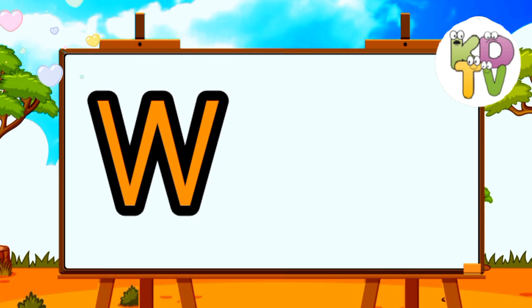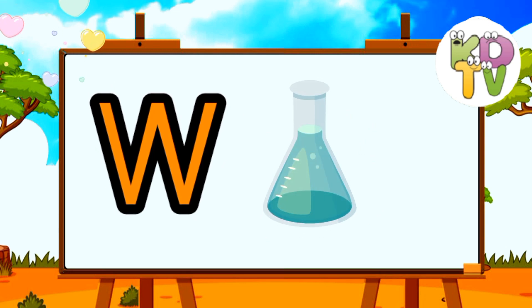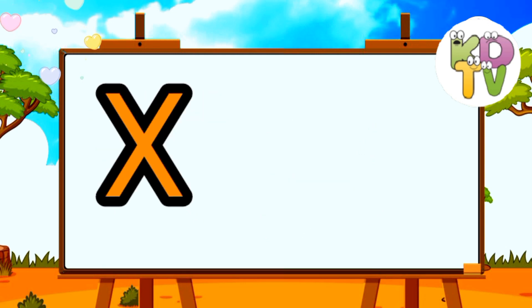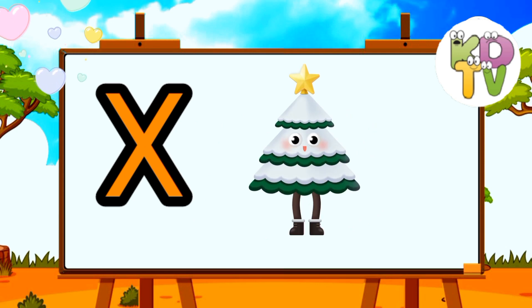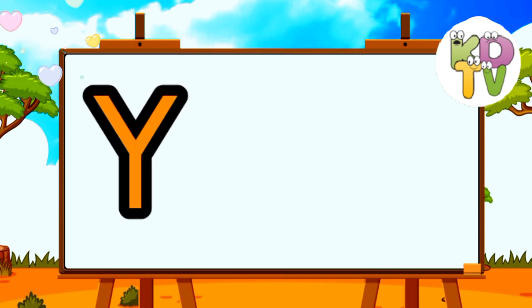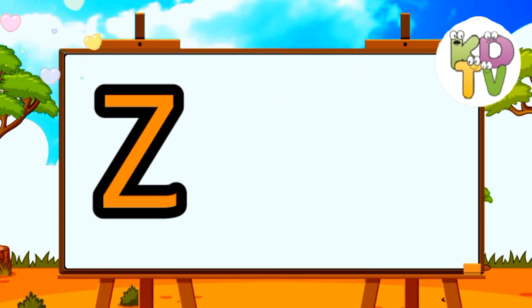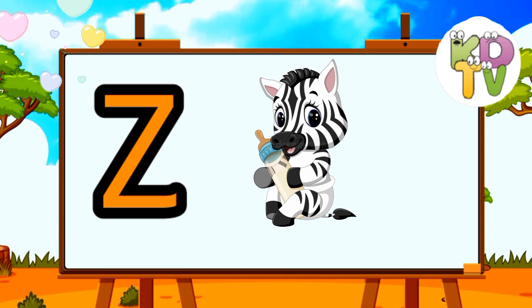W is for Water. X is for X-ray. Y is for Yoke. Z is for Zebra.